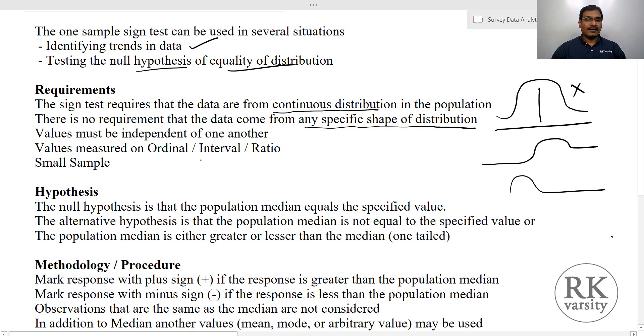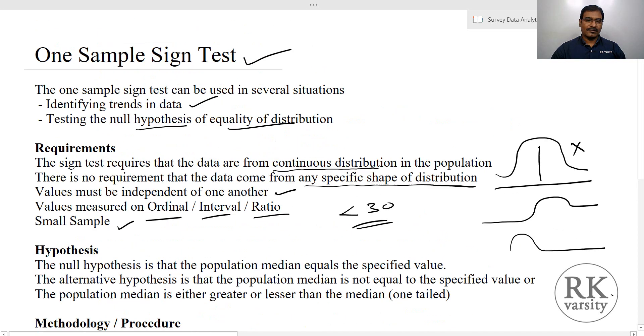The values must be independent of each other. These to be measured using an ordinal scale, interval scale, or ratio scale, any of these scales, and the sample size should be a small sample. When we are saying small sample in statistics, we consider a sample which is less than 30. In all these occasions, we can perform one sample sign test.